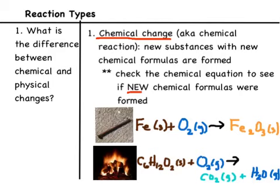We've got two examples. This is a rusty nail, and the equation is right next to it: iron solid plus oxygen gas react to form iron(III) oxide. This equation isn't reflecting the law of conservation of mass, so we need to balance it first. Go ahead and pause the video, try to balance it yourself, and then resume in just a sec.